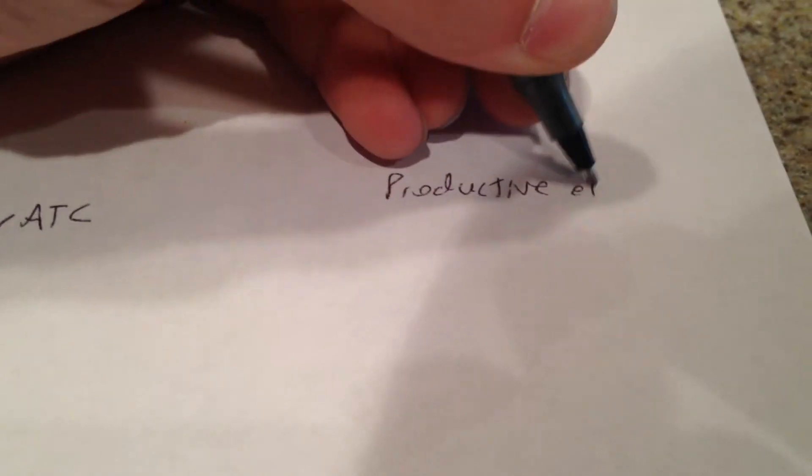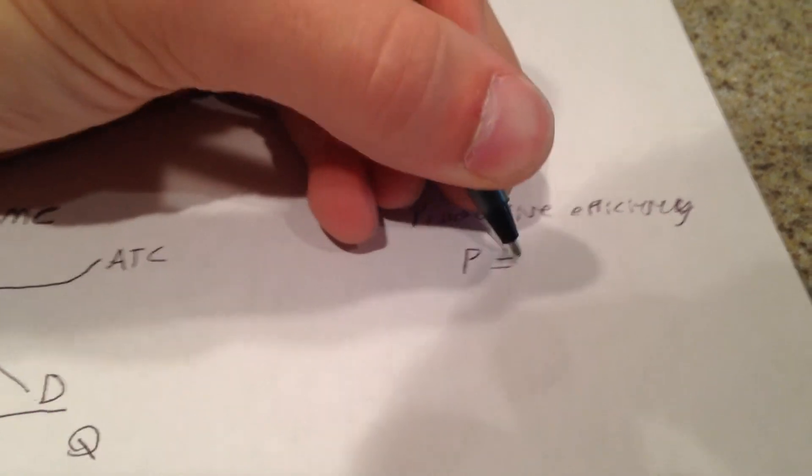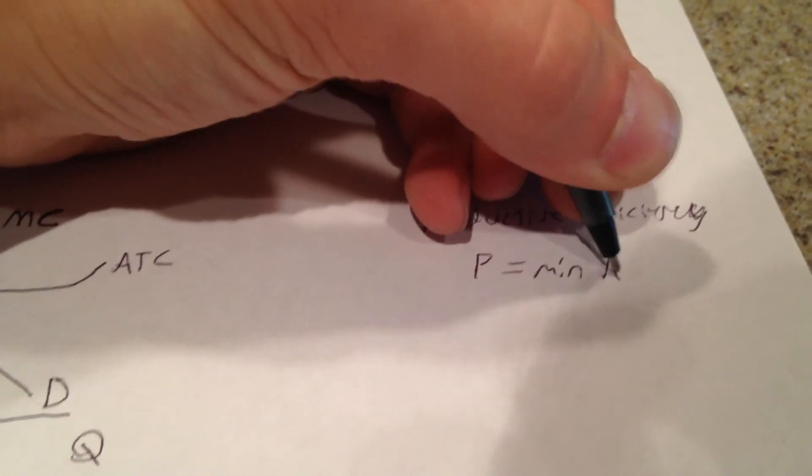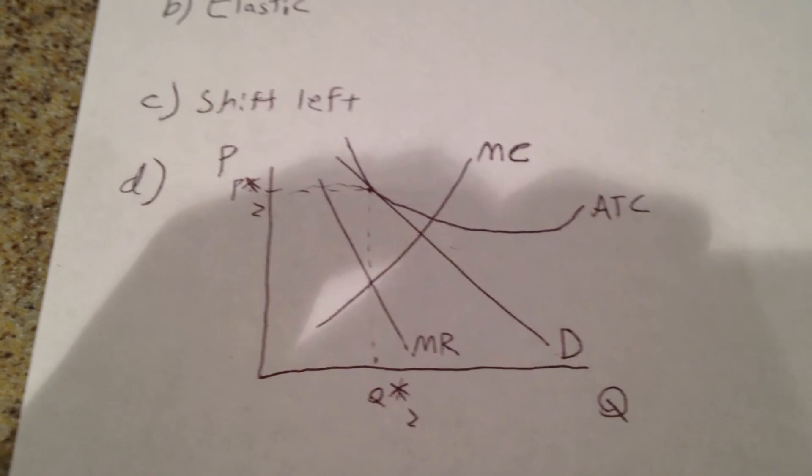And how do we know this? Well, monopolistically competitive firms are not productively efficient. And productive efficiency is achieved when price equals the minimum ATC. So we can write that over here: productive efficiency is when your price equals your minimum ATC. This is not the case in a monopolistically competitive firm, as you can see in this graph right here in the long run.